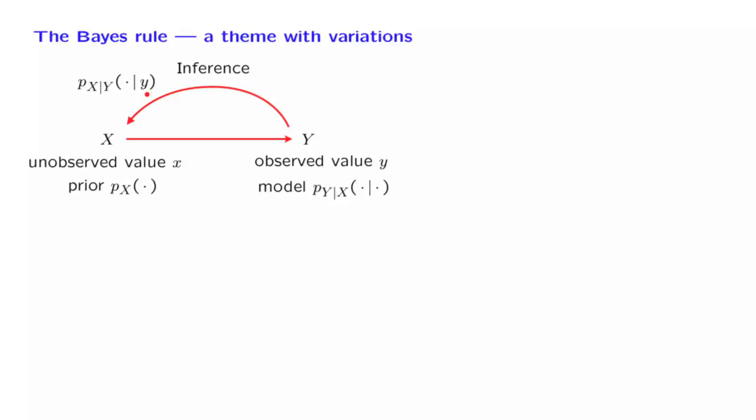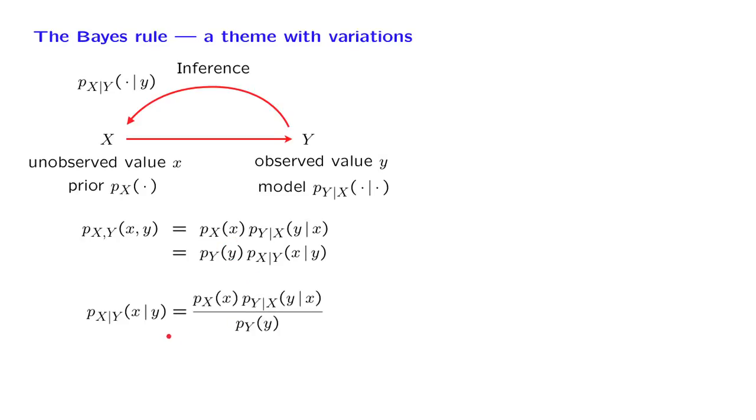We have seen the Bayes' rule for events, but it is easy to translate into PMF notation. We take the multiplication rule and use it twice in different orders to get two different forms or two different expressions for the joint PMF. We then take one of the terms involved here and send it to the other side. We obtain this expression, which is the Bayes' rule.